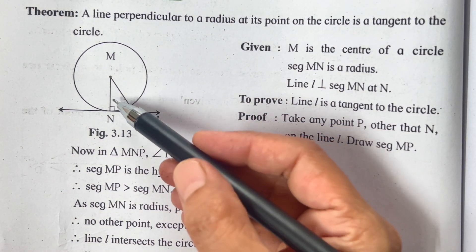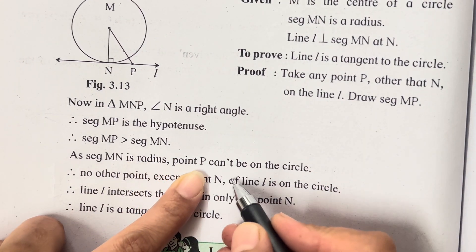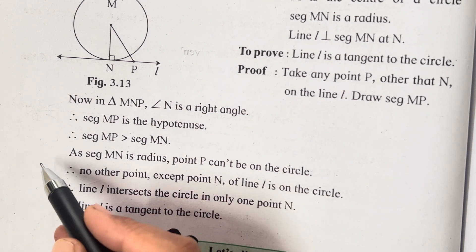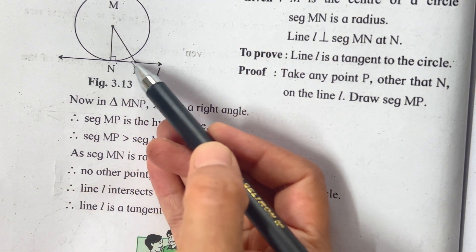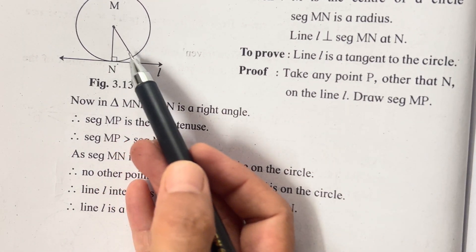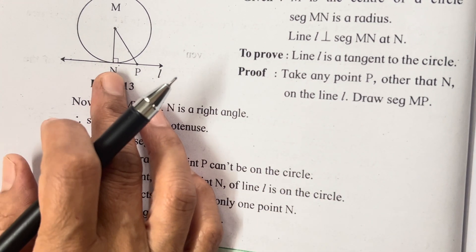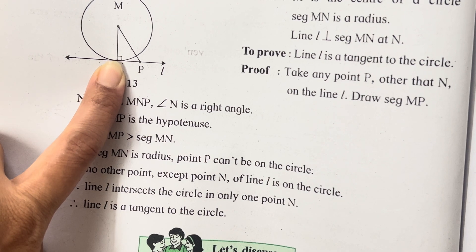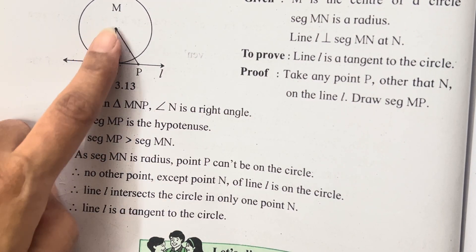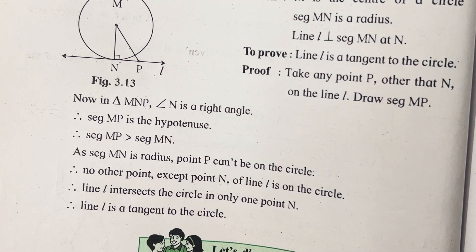MP is greater than MN, as is visible in the diagram — it is slightly greater. Therefore, segment MN is the radius and point P cannot be on the circle. No other point except N of line l is on the circle. If you draw numerous segments, none of them will form the perpendicular the way MN does — only MN will be 90 degrees, joining the circle as well as the tangent at point N. That is the main converse of the tangent theorem.